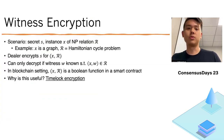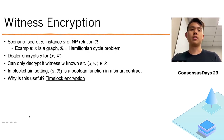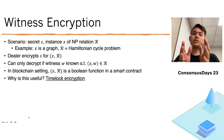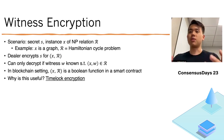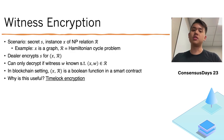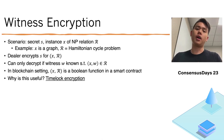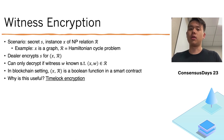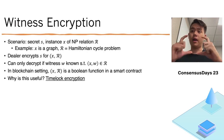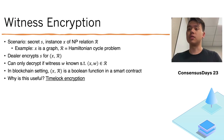So first, let's go through what witness encryption is. It involves a secret S, an instance X of an NP relation R — for example, X may be a graph, and the relation itself might be a Hamiltonian cycle problem. The dealer encrypts a secret for a particular instance-relation pair, and anybody can decrypt this secret only if they know a witness for that particular instance-relation pair — for example, the particular Hamiltonian cycle that corresponds to that graph.